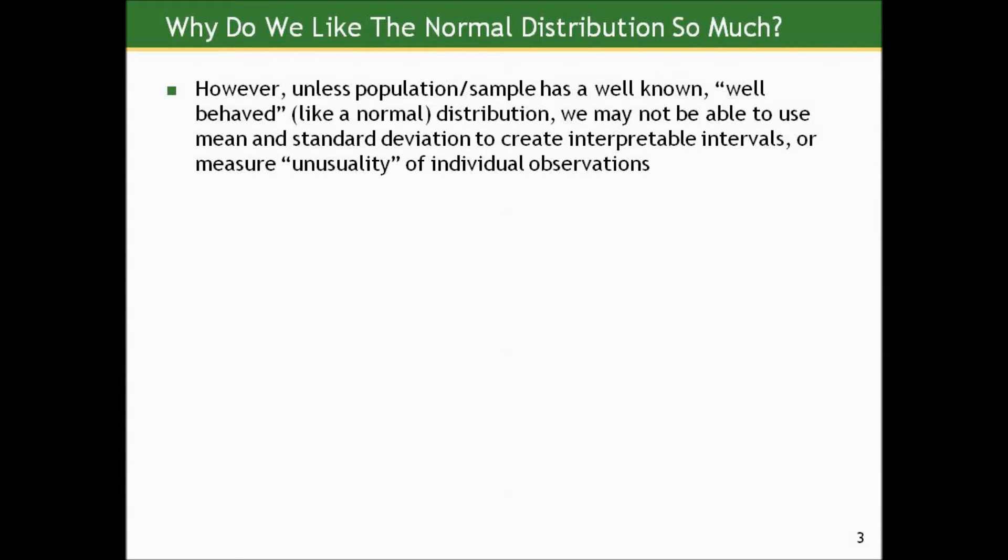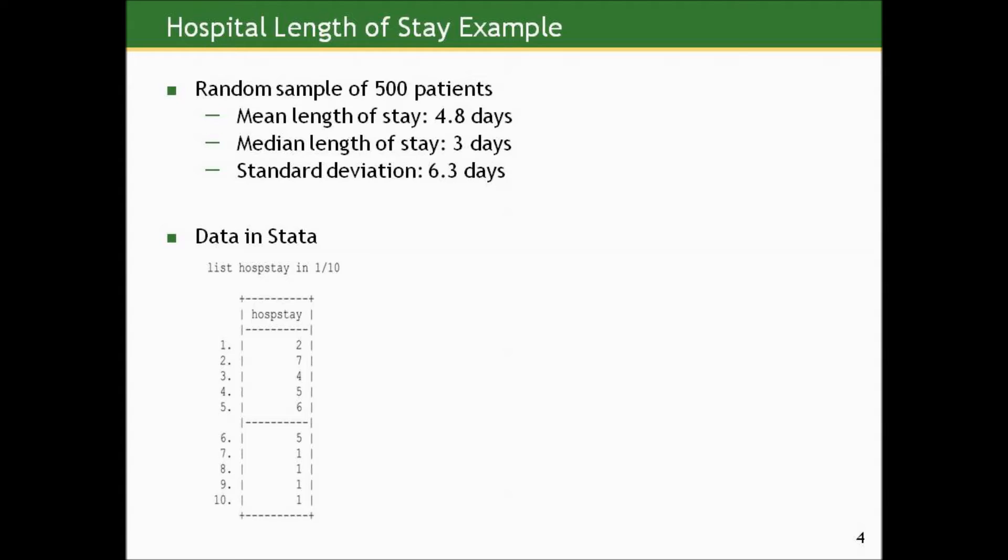Let's go back to our hospital length of stay data. Suppose we're looking at that random sample of 500 patients. We have a mean length of stay in this sample of 4.8 days, a median length of stay of 3 days. So right then and there, we know we're dealing with a pretty heavily positively skewed distribution and a standard deviation of 6.3 days.